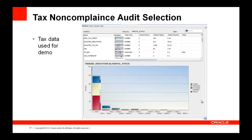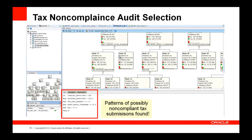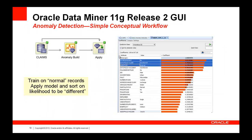Prior to building the models, we may want to visualize the data to see if there are any patterns. The idea is it's probably complicated — if it were easy, you would have figured it out already. We're going to use more automated techniques, such as a decision tree. In actual fraud detection, we might go to more complicated techniques such as our one-class support vector machine algorithm, which is designed specifically for finding very rare occurrences.